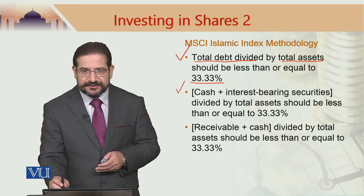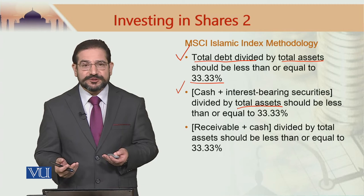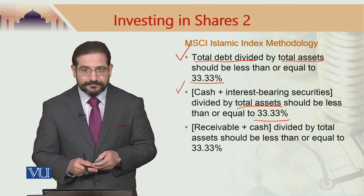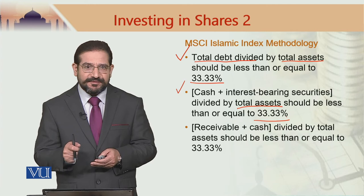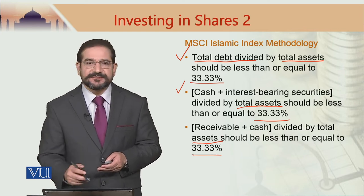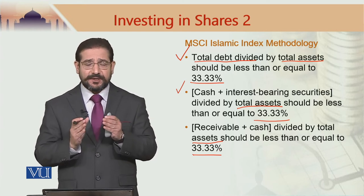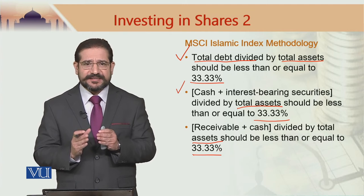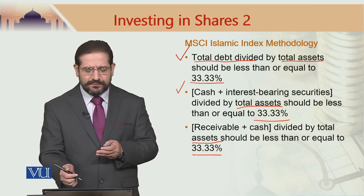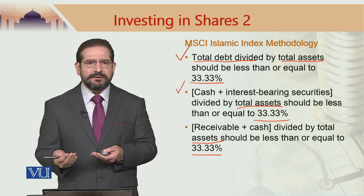The second screen says cash plus interest-bearing securities divided by total assets should be less than or equal to 33.33%. There is a slight difference here: it says receivables plus cash divided by total assets should be less than or equal to 33%. So this methodology is total-assets based — sometimes we call it total-assets denominated. Some methodologies use 33%, others 33.33%. When you apply these screens to actual stocks, you will sometimes get completely different results.